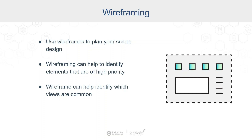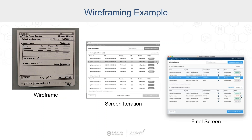Wireframing can help you identify which views are common and help you build templates — really saving you a lot of time. You can also bring your stakeholders in so they can provide feedback. Here is an example of a wireframe our UI/UX team did for our Vision client launcher. There are many options and tools to choose from for wireframing, but you don't need fancy tools — you can simply sketch it out with pencil and paper. Once you're comfortable with the wireframe, share it with stakeholders and get feedback throughout the process.